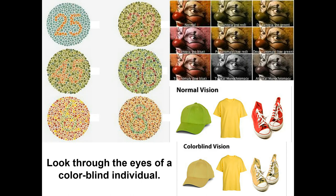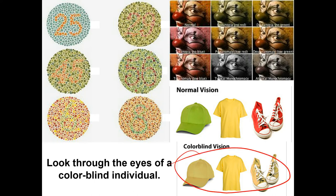Looking at colorblindness: red-green colorblindness is one of the more common types, but there are many variants. With normal vision we see red, green, and blue. Some individuals can't see red, green, or blue. Others can't see low red, low green, or low blue. Monochromacy means an individual can't see any color at all. With red-green colorblindness, green and red are both perceived as shades of yellow.